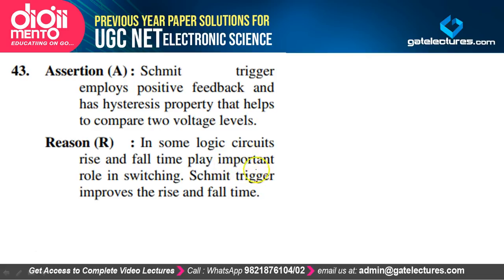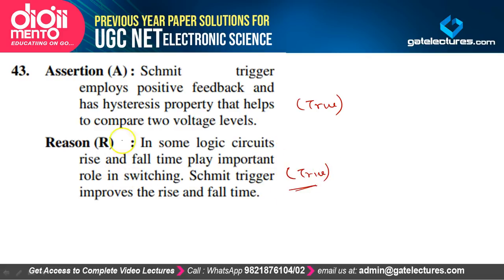Schmitt trigger employs positive feedback and has a hysteresis property that helps compare two voltage levels — true. In some logic circuits, rise and fall time play an important role in switching, and the Schmitt trigger addresses this — true, and R is the correct explanation of A. Option A is correct.